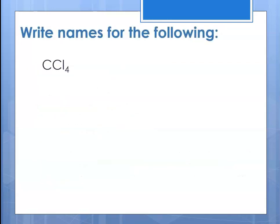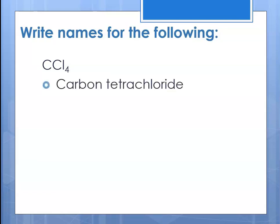Let's try another one: CCl4. The first element is carbon, so we just name carbon — no mono. The second element has a subscript of four, which means 'tetra.' Then 'chlor' for chlorine and 'ide' because it's binary, giving us carbon tetrachloride.